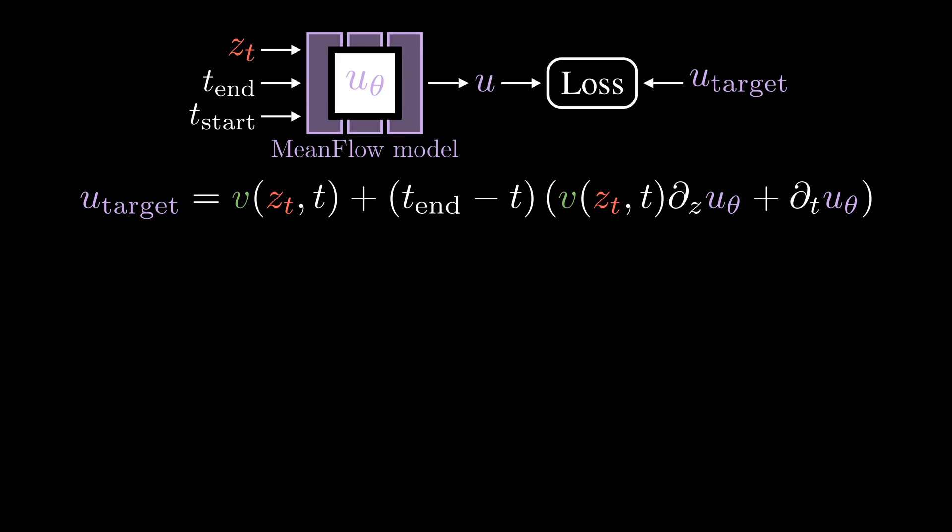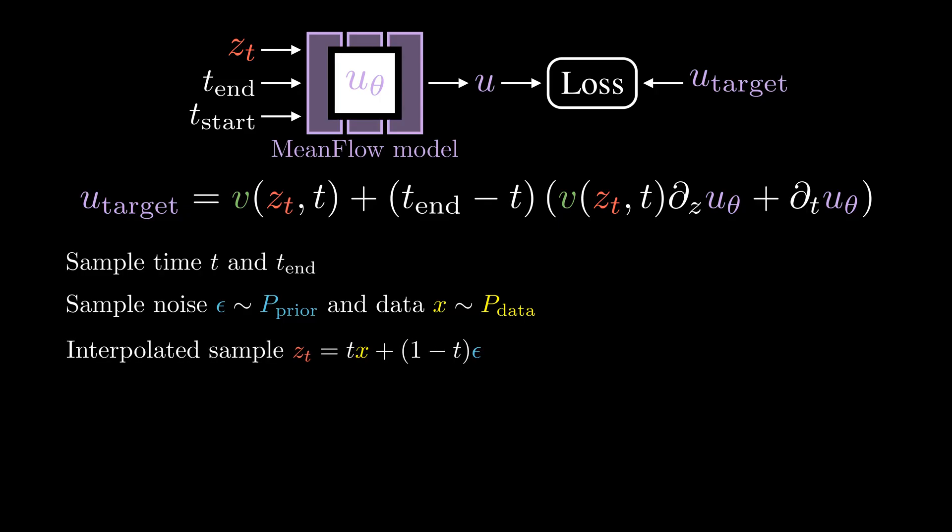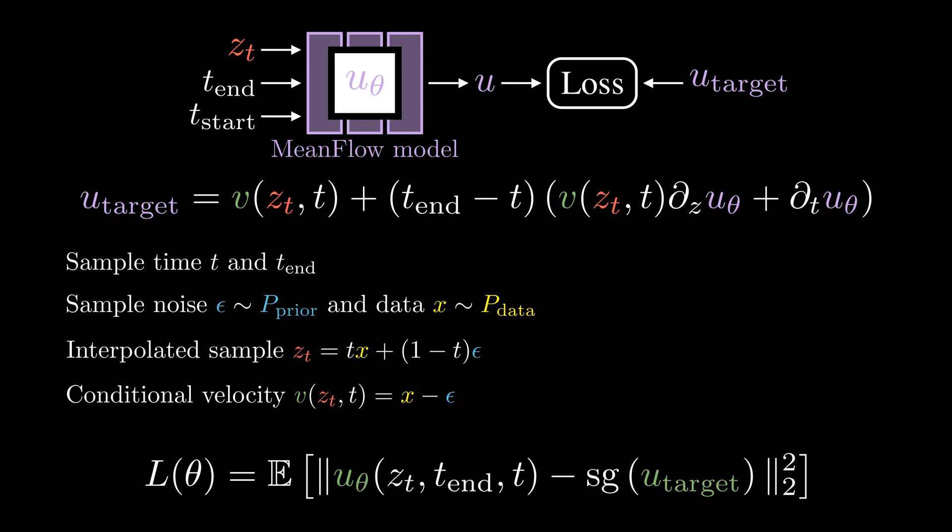So the training process looks like this. We randomly sample a pair of time between 0 and 1. Similar to flow matching, we sample a noise epsilon from the prior distribution and data x from the data distribution. We can then get the interpolated sample zt and the corresponding conditional velocity as x minus epsilon. Using all the information, we can train the mean flow model using a simple regression loss to match the average velocity.